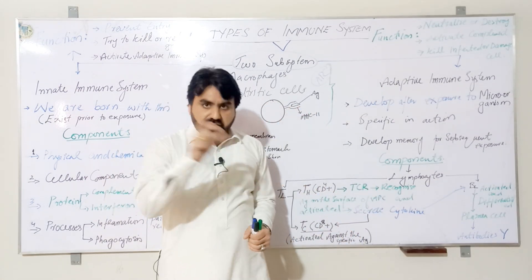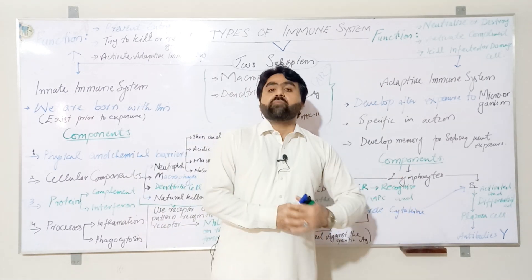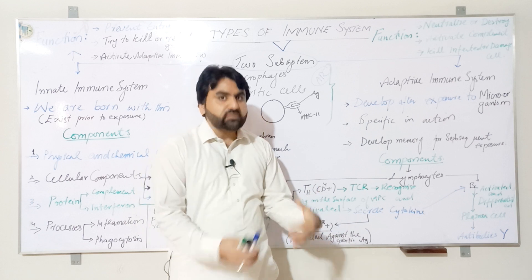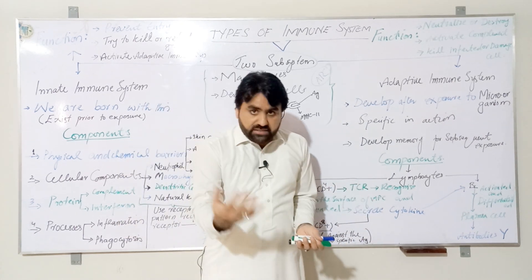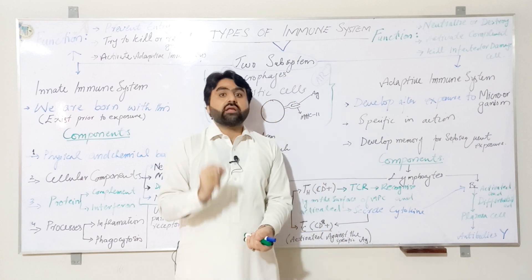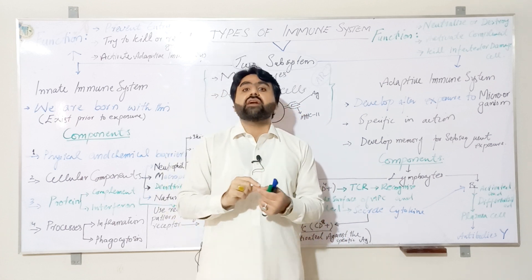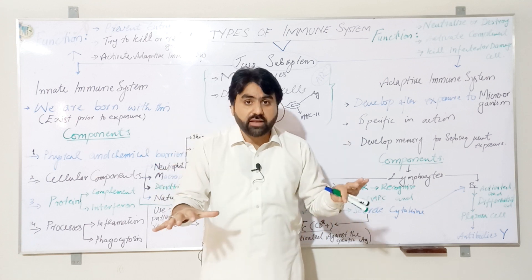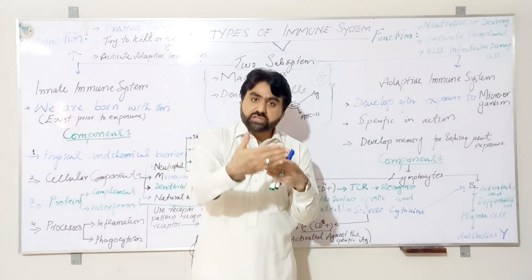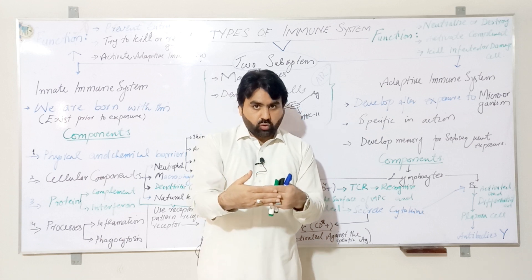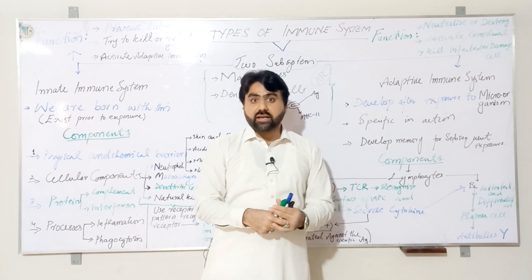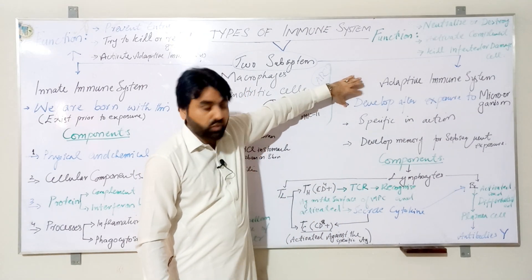The effector molecules of adaptive immunity — antibodies and cytotoxic T cells — are very specific in action. For example, if an antibody is produced against the COVID-19 virus, this antibody will only react with that virus and will not react with any other microorganism. These antibodies develop after exposure to COVID-19; it is not the case that antibodies are present at birth — they are always produced after exposure to a particular antigen.